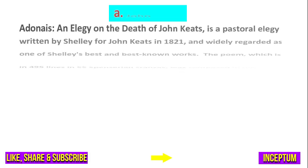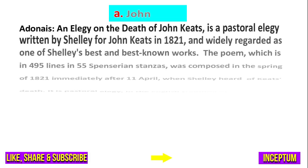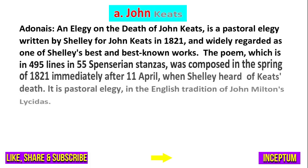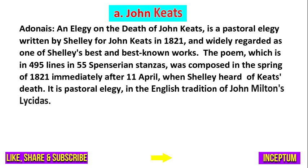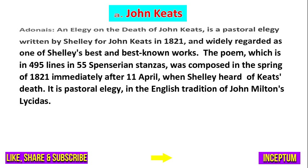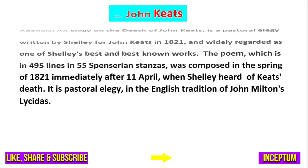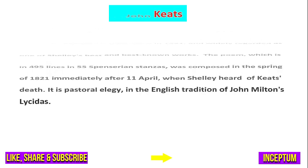And the right answer of this question is option A — John Keats. Adonais, an elegy on the death of John Keats, is a pastoral elegy written by P.B. Shelley for John Keats in the year 1821 and widely regarded as one of Shelley's finest works. The poem, which is 495 lines in 55 Spenserian stanzas, was composed in the spring of 1821, immediately after 11th April when Shelley heard of Keats' death. It is a pastoral elegy in the English tradition of John Milton's Lycidas.